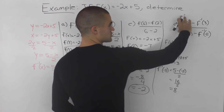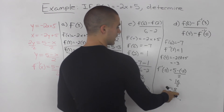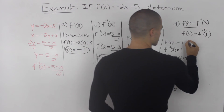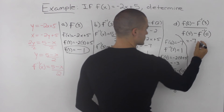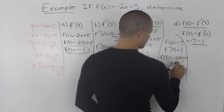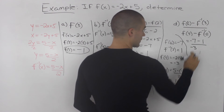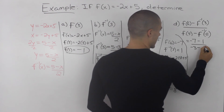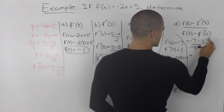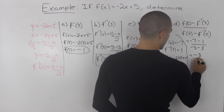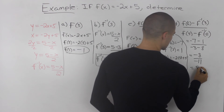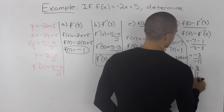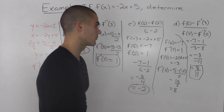Now we have all the pieces and can substitute them in. So f(6) minus f⁻¹(3) is negative 7 minus 1, which is negative 8. And f(4) minus f⁻¹(negative 11) is negative 3 minus 8, which is negative 11. So negative 8 over negative 11 gives us 8 over 11. That is our final answer for part d.